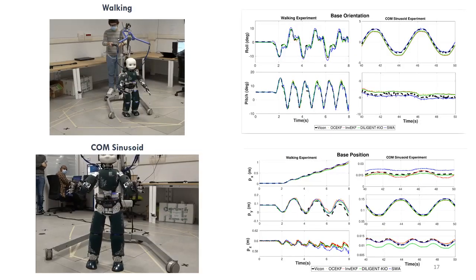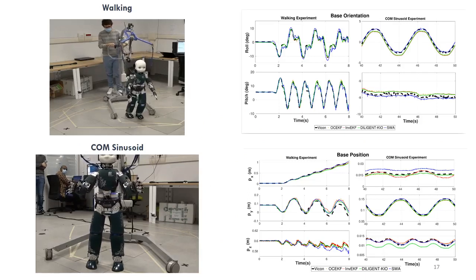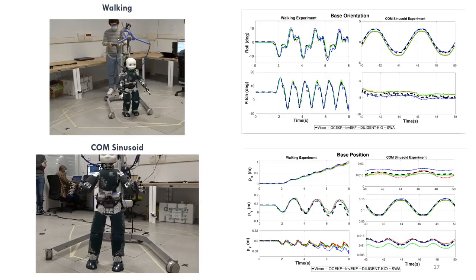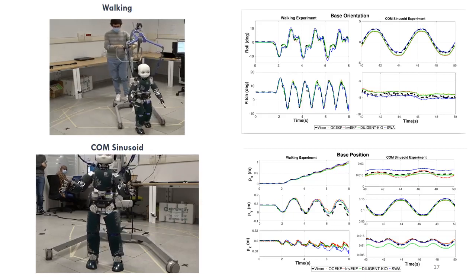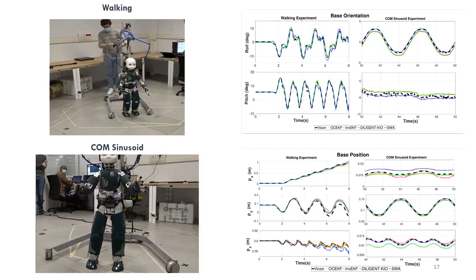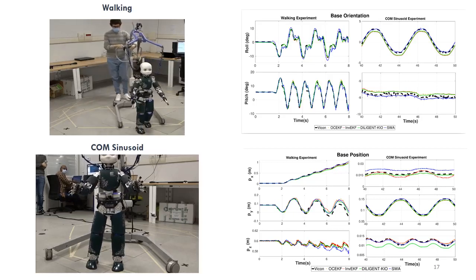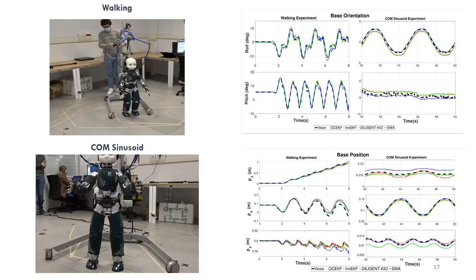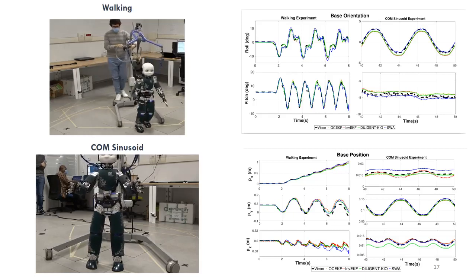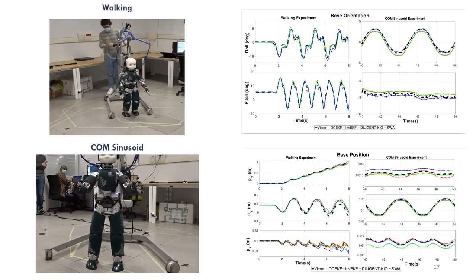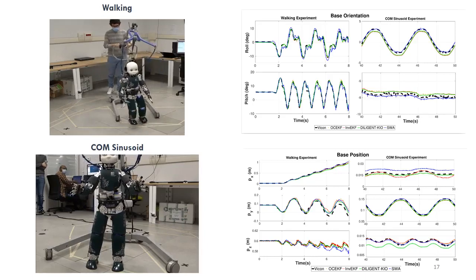We first perform a position-controlled walking experiment where iCub walks forward approximately 1 meter, as seen in the video. The evolution of roll and pitch angles of the base link along with position estimates for the walking experiment are shown in the plots in the left column. We also evaluate the filters on a torque-controlled sinusoidal center of mass trajectory tracking experiment, with relevant plots in the rightmost column. In both cases, Diligent KIO performs comparably with the state of the art. Noticeable drifts in position estimates for the walking experiments remain within a very small percentage of the total distance travelled for all filters.